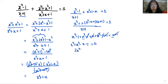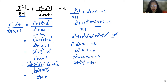So 2x³ minus x minus 1 equals 0. I can rewrite x as minus 2x plus x, giving 2x³ minus 2x plus x minus 1 equals 0. Taking 2x as common gives x² minus 1, and taking 1 as common gives x minus 1. Using the identity a² minus b² = (a+b)(a-b), this becomes 2x(x plus 1)(x minus 1) plus (x minus 1) equals 0.